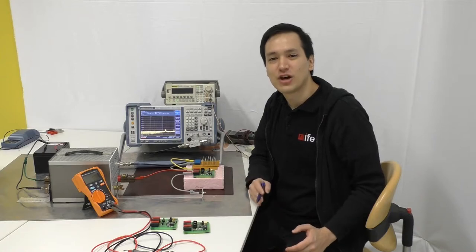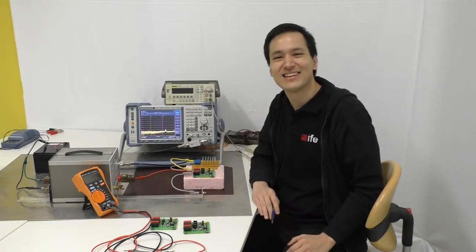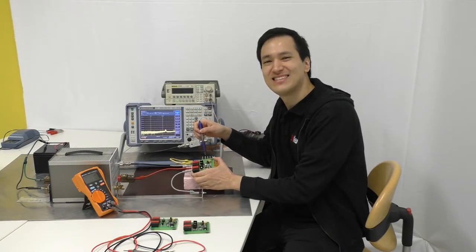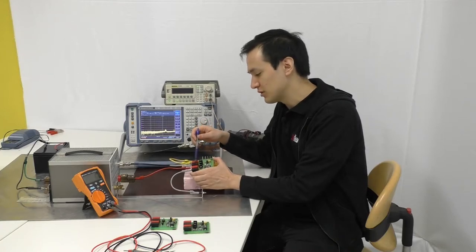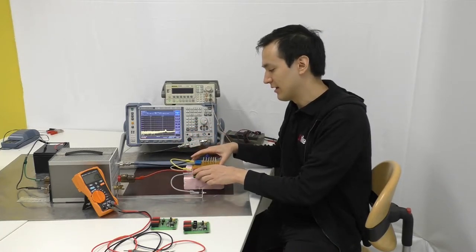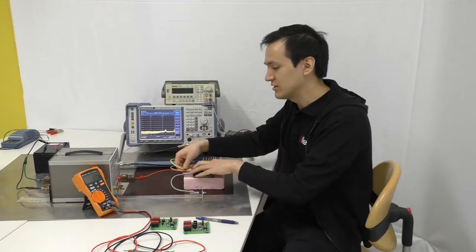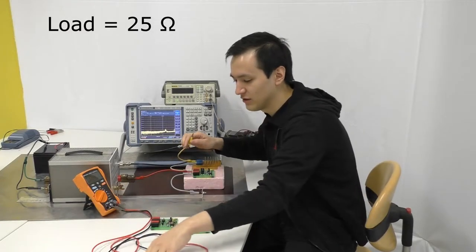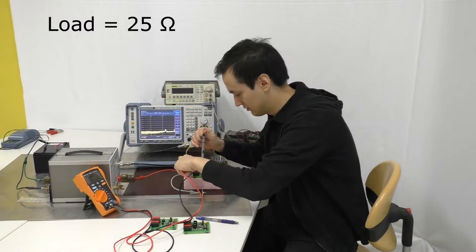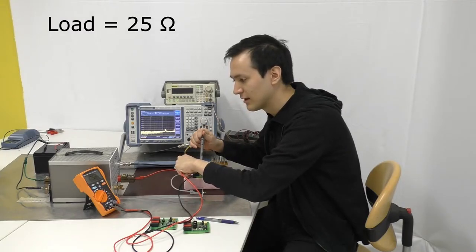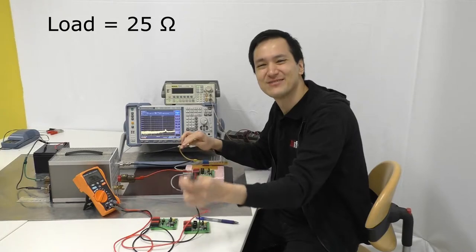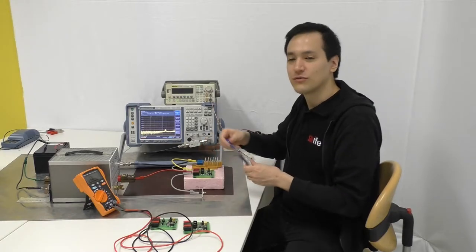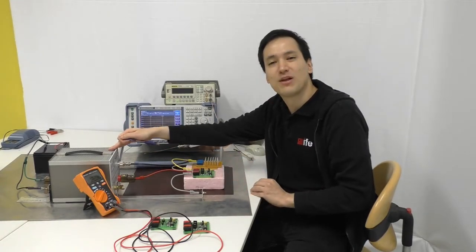As usual, I want to start off by explaining the test measurement setup for today. First here, this green PCB is our DC-DC converter. Its output here is connected to our load. This load here is just an ohmic resistor with a resistance of about 25 ohms.